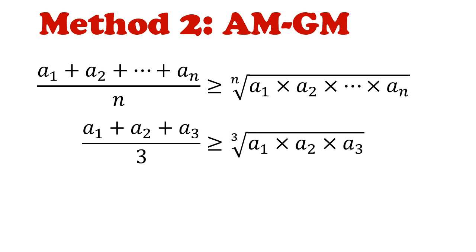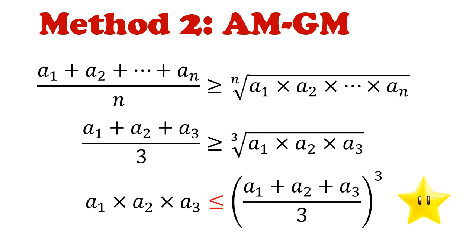The trick specifically is going to involve the cube. So if we cube this, then the product of a1 times a2 times a3 is always less than or equal to the arithmetic mean (a1 plus a2 plus a3) over 3 cubed.